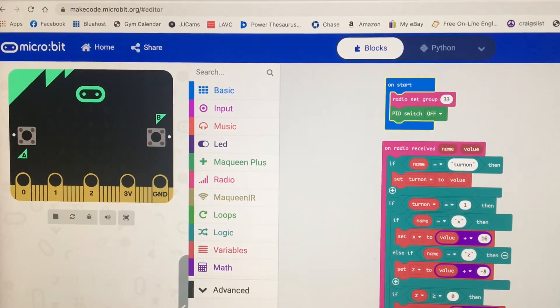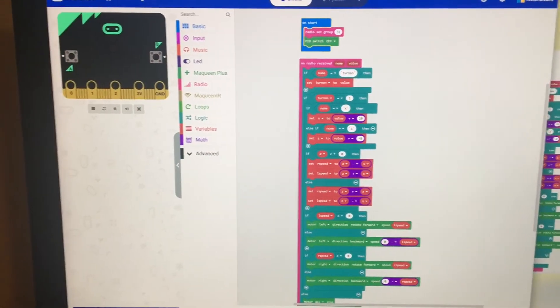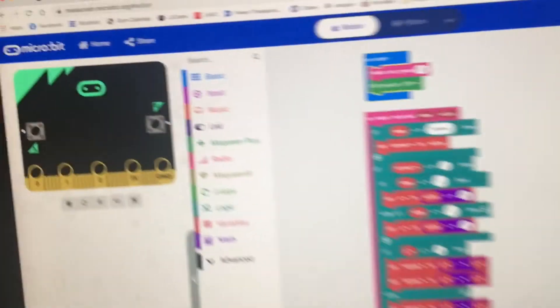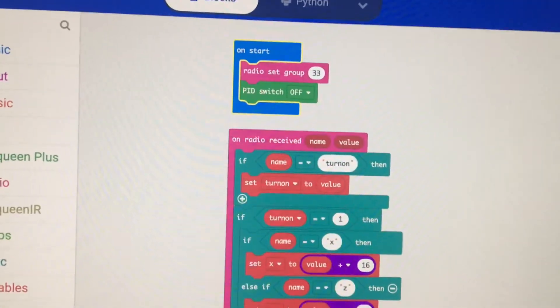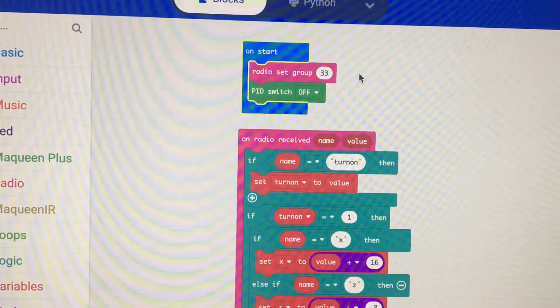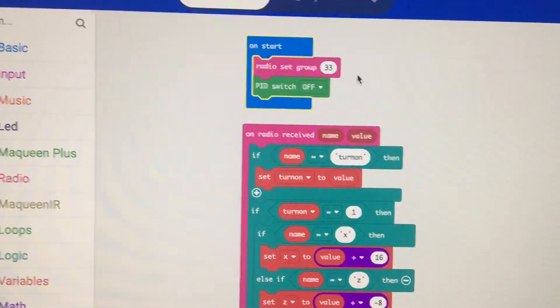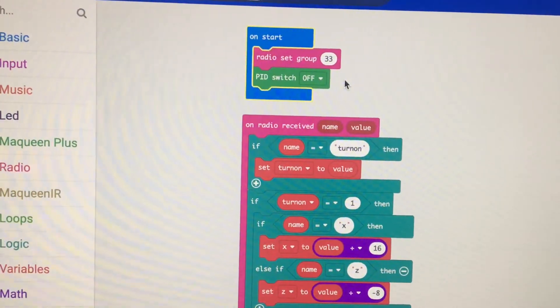And here is the program for the receiver which is in the robot. Here's the start routine. I set the radio to receive on channel 33. For some reason it works better with the PID motor control turned off.